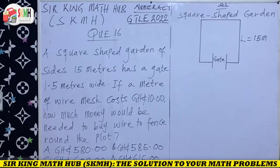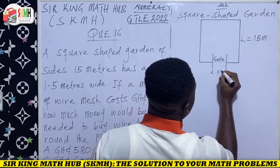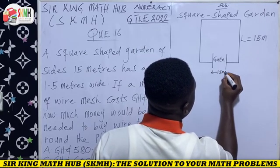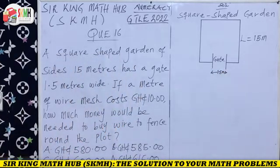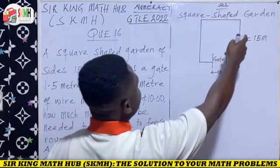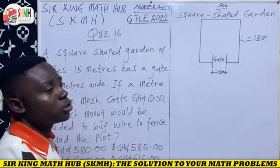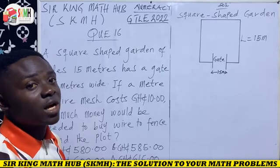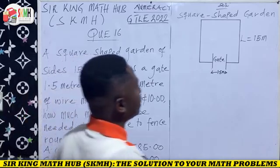There is our gate, and we are told that this gate is 1.5 meters wide — so from this point to here it is 1.5 meters wide. Our goal here is to fence around this square-shaped garden using wire mesh. Let's calculate the length of wire mesh needed to fence around our square-shaped garden. Let's assume we are starting from here.